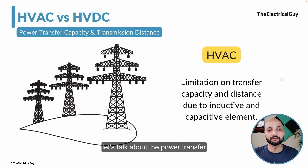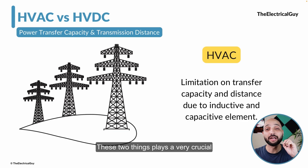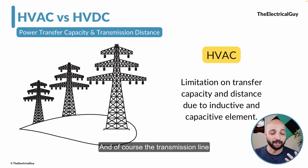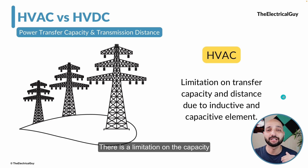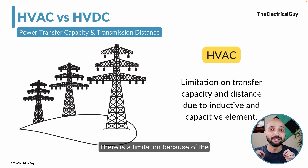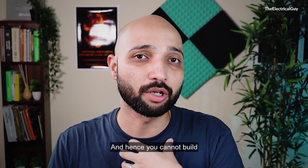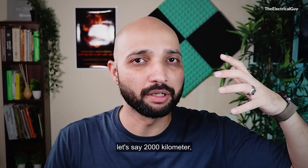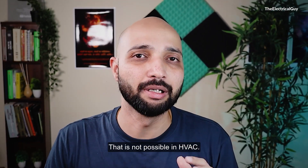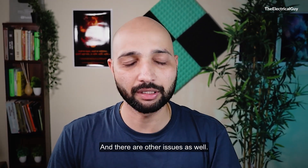Moving on, let's talk about power transfer capacity and transmission distance. In alternating current, two terms are inevitable: inductance and capacitance. These play a very crucial role in the complete AC system, and the transmission line faces the same issue. Because of these two things, there is a limitation on the capacity of power transmission and also the distance over which we can transmit. You cannot build a 2000–3000 km long transmission line in HVAC, and there is a limitation on power transfer capacity as well due to heating and other issues.